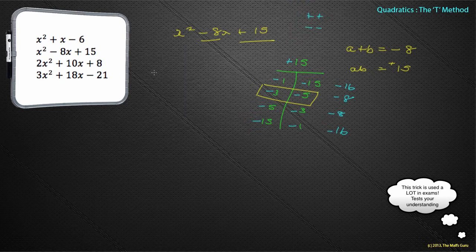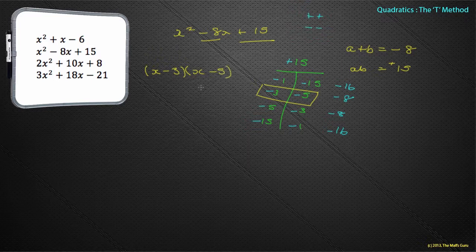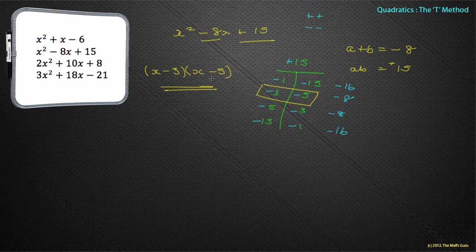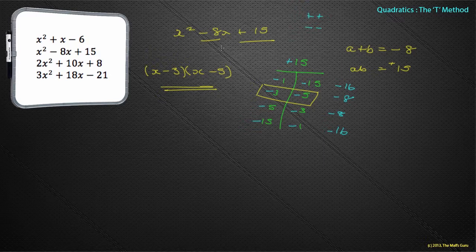So I can now write that down. This will be (x - 3)(x - 5). And there we go, we've now factorized our quadratic. And if you want to check in your own time, if you multiply these two out, you will in fact get x² - 8x + 15.